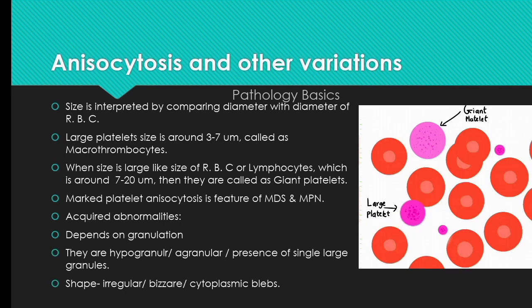Now we learn about anisocytosis and other variations. These small pinkish dot-like cells in between RBCs are platelets. Platelet size is interpreted by comparing the diameter of the platelet with the diameter of the RBC. The large platelet size is around 3 to 7 microns, which is also called macrothrombocytes.